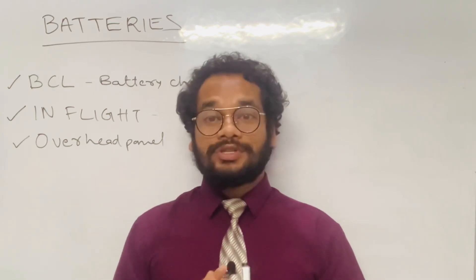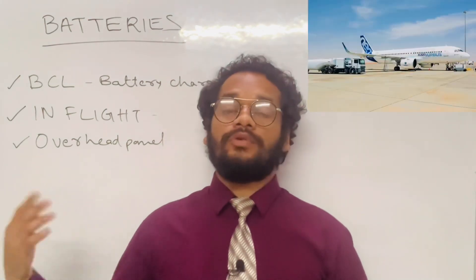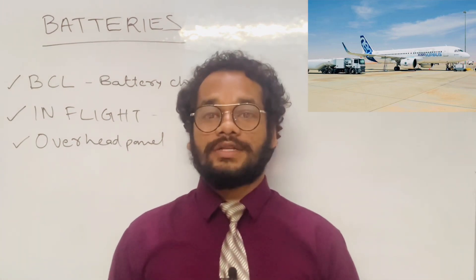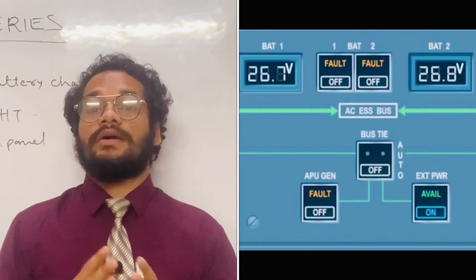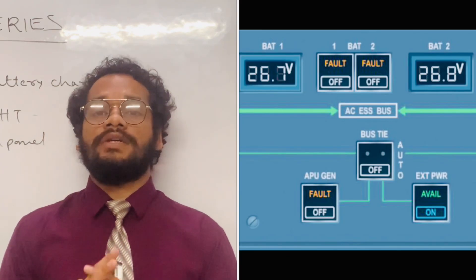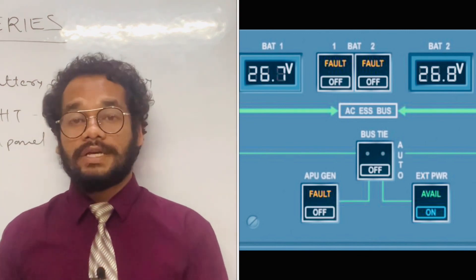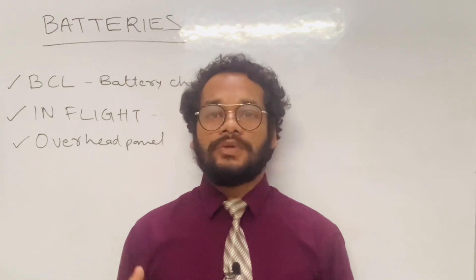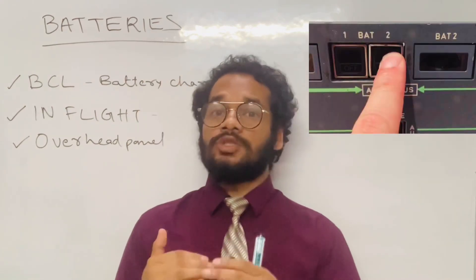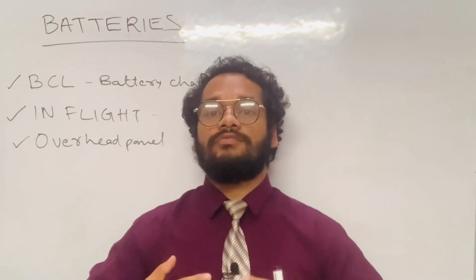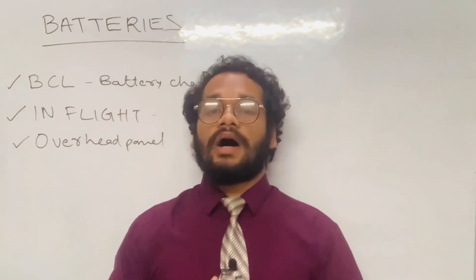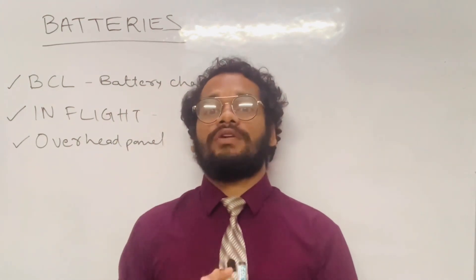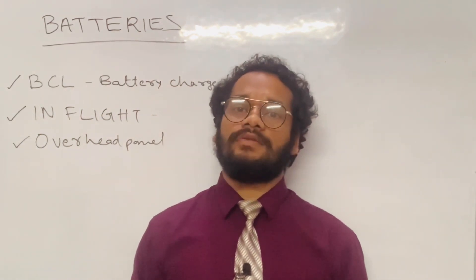If the aircraft has been parked for more than six hours without electrical power, we check the battery voltage by setting the push buttons to OFF. The voltage of Battery 1 and Battery 2 should each be greater than 25.5 volts. If less, the batteries need charging — connect external power, set push buttons to AUTO, and charge for 20 minutes. After charging, recheck the voltage; it should again be greater than 25.5 volts.